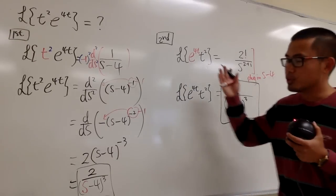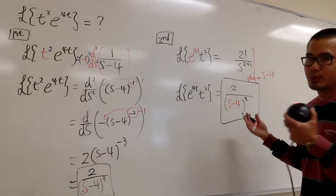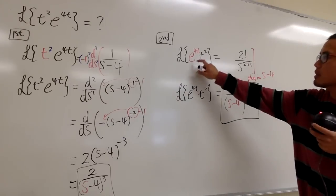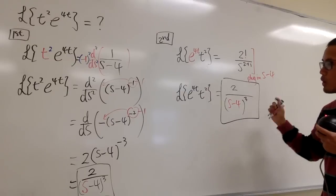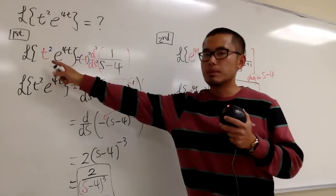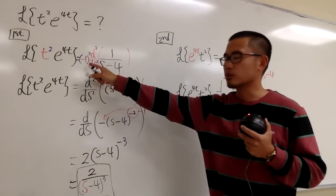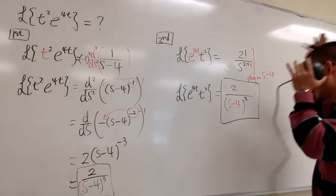So as you can see, we do have these two properties, and this is the comparison between which one that you would like better. Of course, utilize this. e to the 4t is just a shift. It's a translation in the s world. And if you multiply by t something, it's however many times you have to differentiate, and also multiply by negative 1, whichever many times. Anyway, this is it!